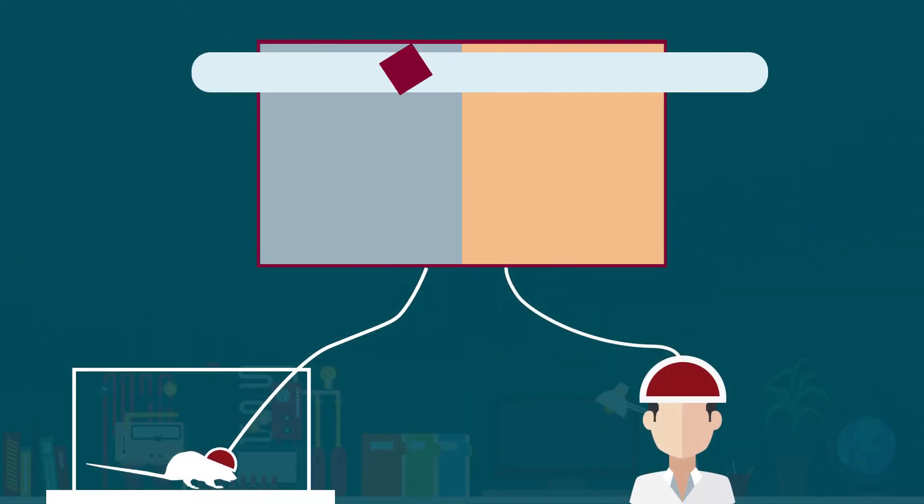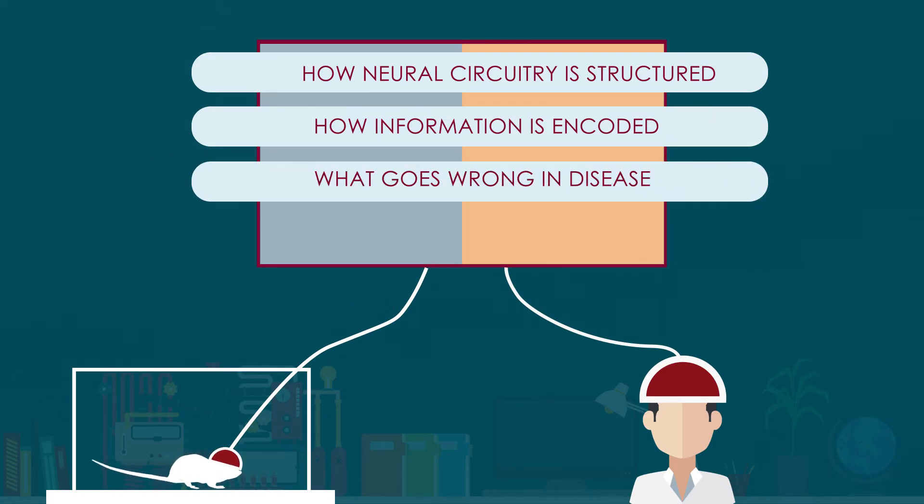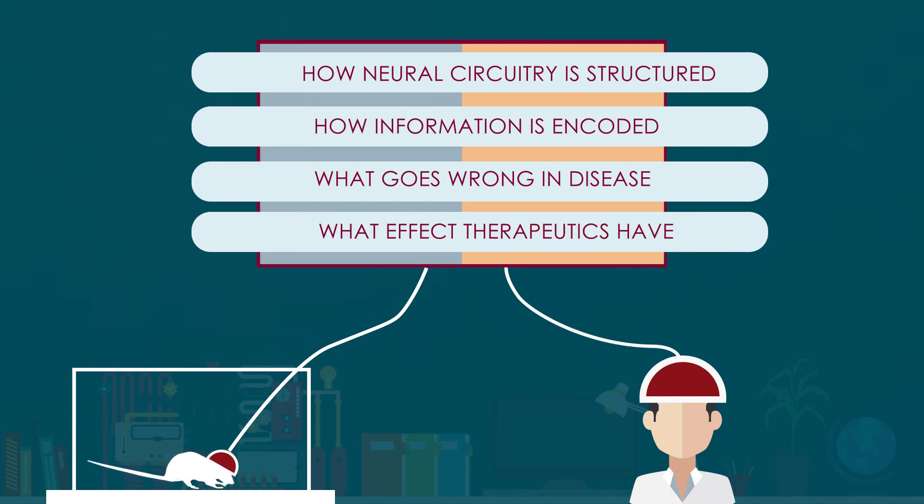We're learning how information is encoded in neural firing, what goes wrong in psychiatric and neurological diseases such as depression, addiction, schizophrenia, and many others, and what effect therapeutics have.